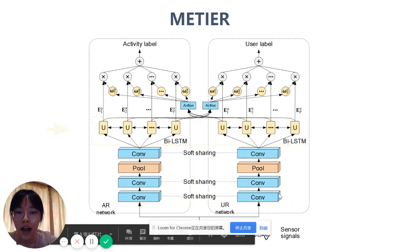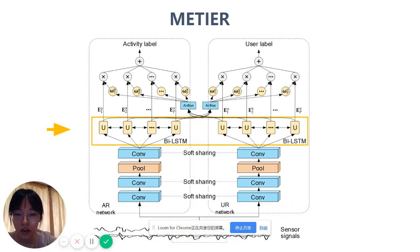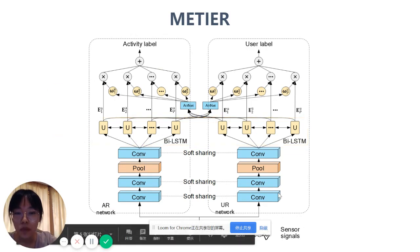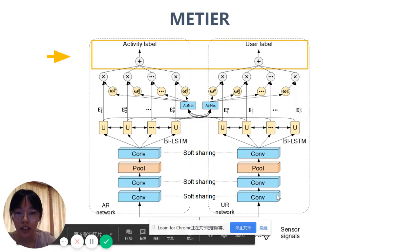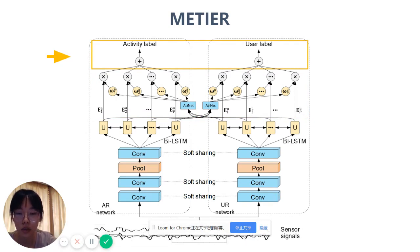then a bidirectional LSTM layer. Finally, the attention mechanism highlights important features by weights, and these weighted features are used for classification. METIER softly shares parameters between activity and user recognition networks and optimizes them together.